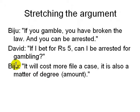David points out tongue-in-cheek that betting even five rupees could technically mean arrest for gambling. BG identifies another flaw: it's a matter of degree. Nobody pursues a case for five rupees, but the law is broken in letter if not in spirit when the amount is too small to be worth pursuing.